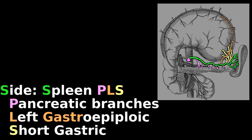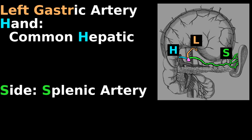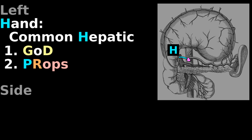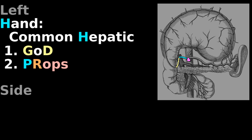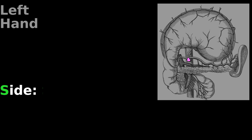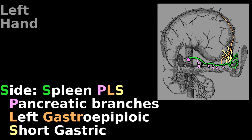To review the celiac trunk: left hand side, with hand divided into God Props, where God makes pain all right, and Props split into left and right hepatics. Side is spleen please. Pause and review.